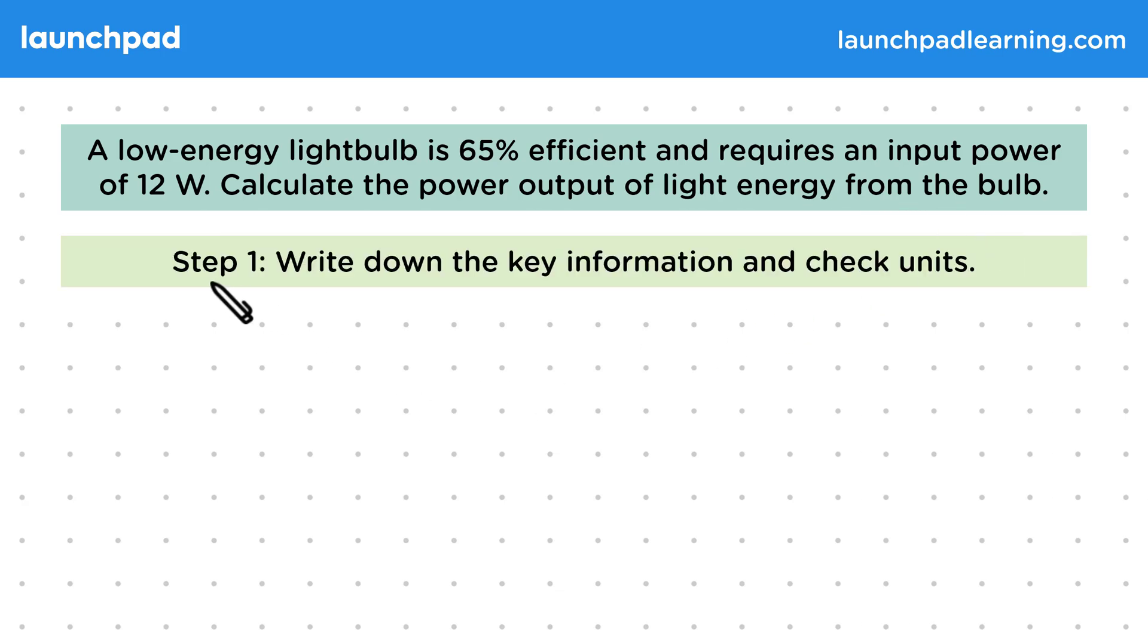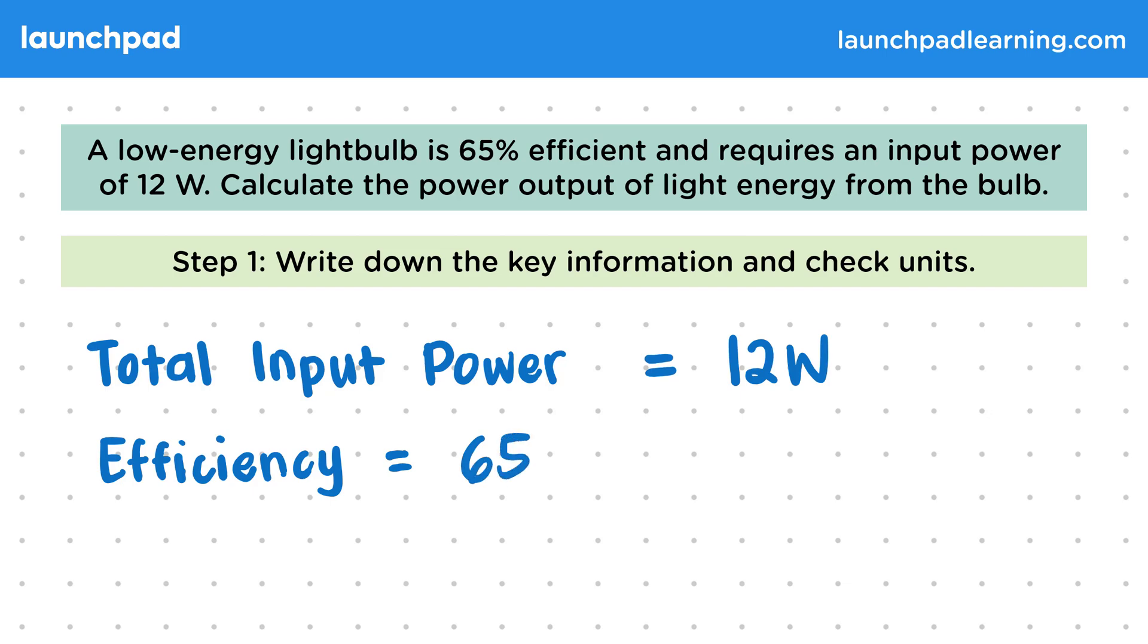Once again, for the first step, let's write down the key information and check our units. The total input power is equal to 12 watts. The efficiency of the process is given as 65%. For our equation, we need a decimal, so we divide this by 100 to give us 0.65, and we want to calculate the useful output power.